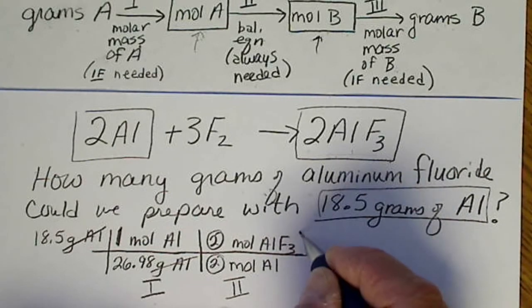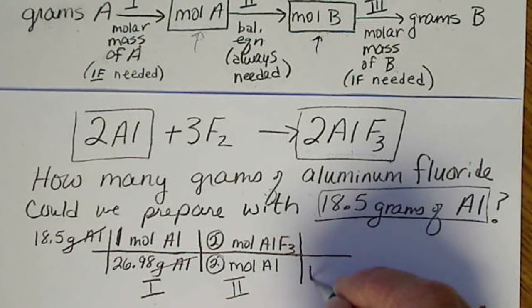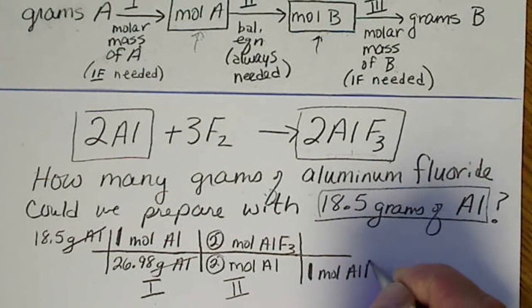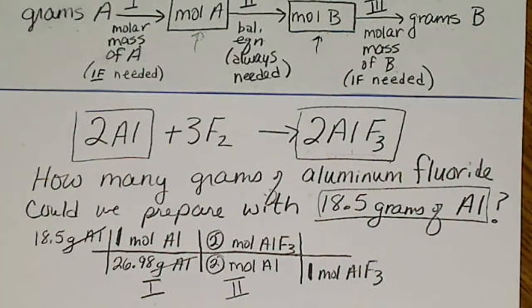And now we're going to have to get out the periodic table and do the molar mass of aluminum fluoride. So one mole of AlF₃ is going to be 26.98. We're going to add that to what three times fluorine is. And fluorine weighs 19 grams per mole.